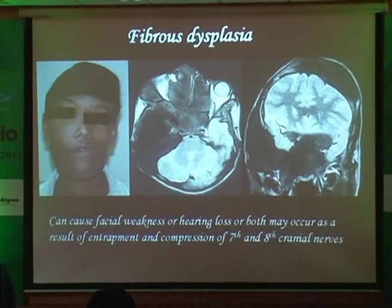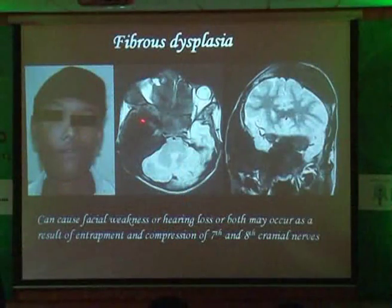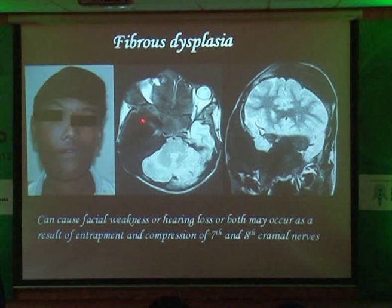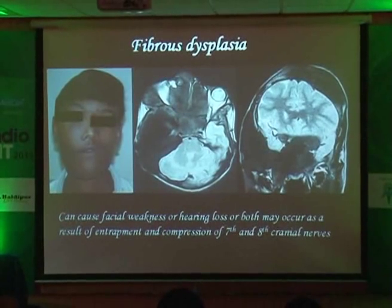Fibrous dysplasia looks ghastly on MR because it contains fibrous tissue, which contains less water. Since MR is sensitive only to hydrogen, fibrous dysplasia appears dark. Only when there is hydrogen does it look bright. Look at this: there is a large fibrous dysplasia involving the petrous temporal and the ethmoids. This patient was deaf and also blind on the right side — not just due to 7th and 8th nerve involvement, but the optic canal was also encroached upon by fibrous dysplasia. So look beyond the temporal bone.